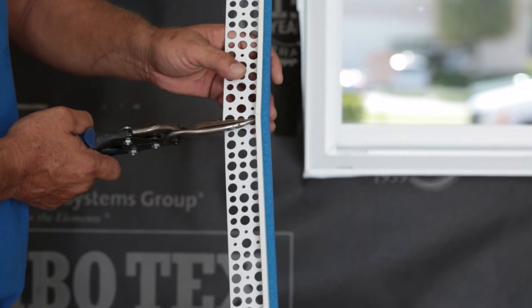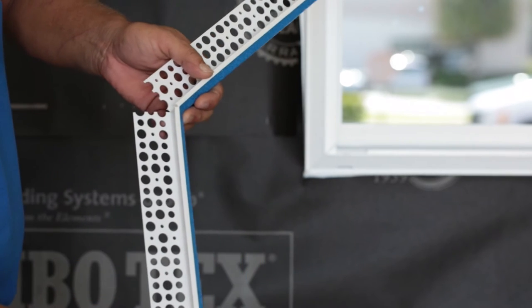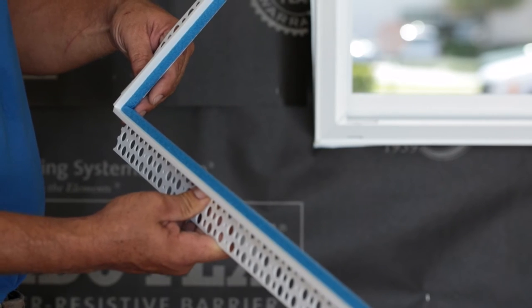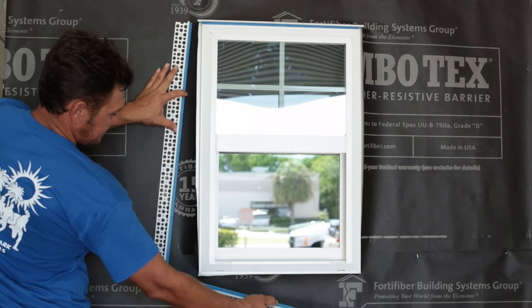Using the window as a guide, the backer bead is then cut. The attachment flange is cut to 90-degree angles. Doing so ensures the backer bead is continuous throughout, therefore improving the weather-resistive barriers around the opening.